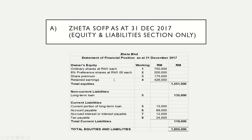This is the extract of SOFP for 31st December 2017. We start with owner equity, followed by non-current liability and current liability. The total equity and liability amounts to RM1,805,000. The first items in equity consist of ordinary shares RM750,000, preference shares RM200,000, share premium RM175,000, and retained earnings RM426,000.